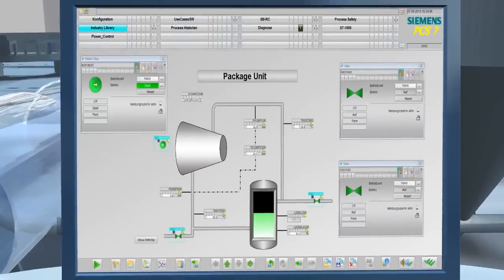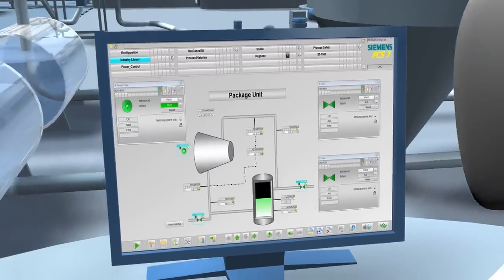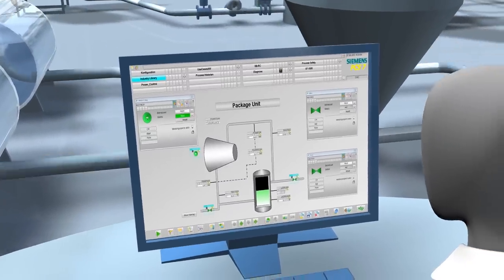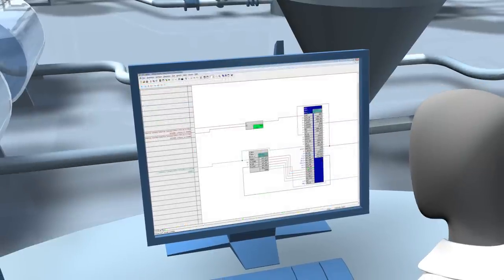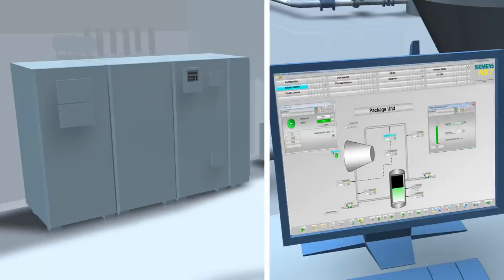With the help of the Industry Library, you can implement your graphical and technological engineering in no time at all using the CFC editor, in the same way as with SIMATIC PCS 7. The controllers of the package units themselves behave like process control systems.